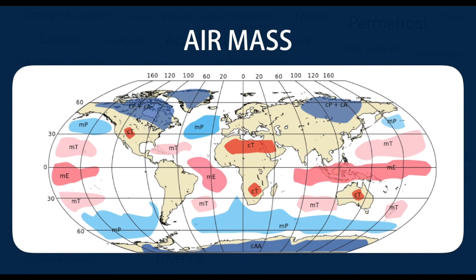Number 17 — Air Mass. In meteorology, an air mass is a volume of air defined by its temperature and water vapour content. Air masses cover many hundreds or thousands of square miles and adapt to the characteristics of the surface below them. They are classified according to latitude and their continental or maritime source regions. Colder air masses are termed polar or arctic, while warmer air masses are deemed tropical. Continental and superior air masses are dry, while maritime and monsoon air masses are moist.